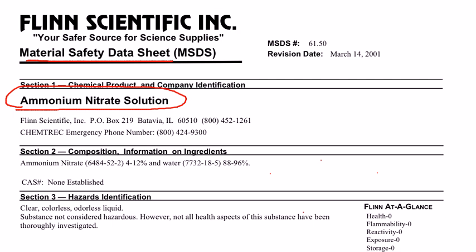The first thing you're going to notice is that it illustrates the composition of the solution. Since this is a solution, it tells you that you're going to find between 4% and 12% ammonium nitrate, and the rest of the solution is going to be water.